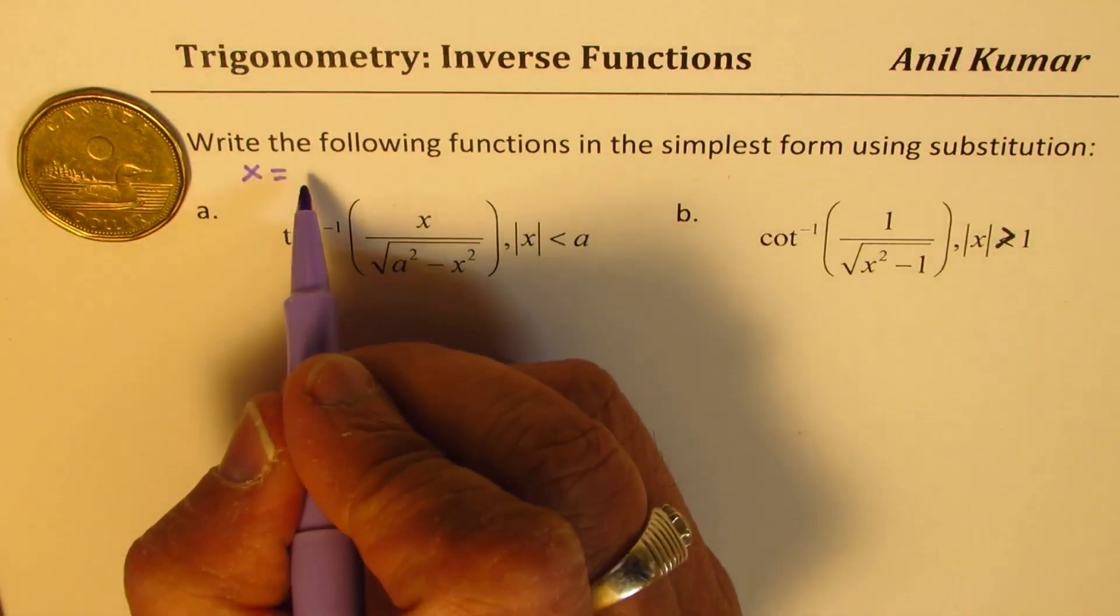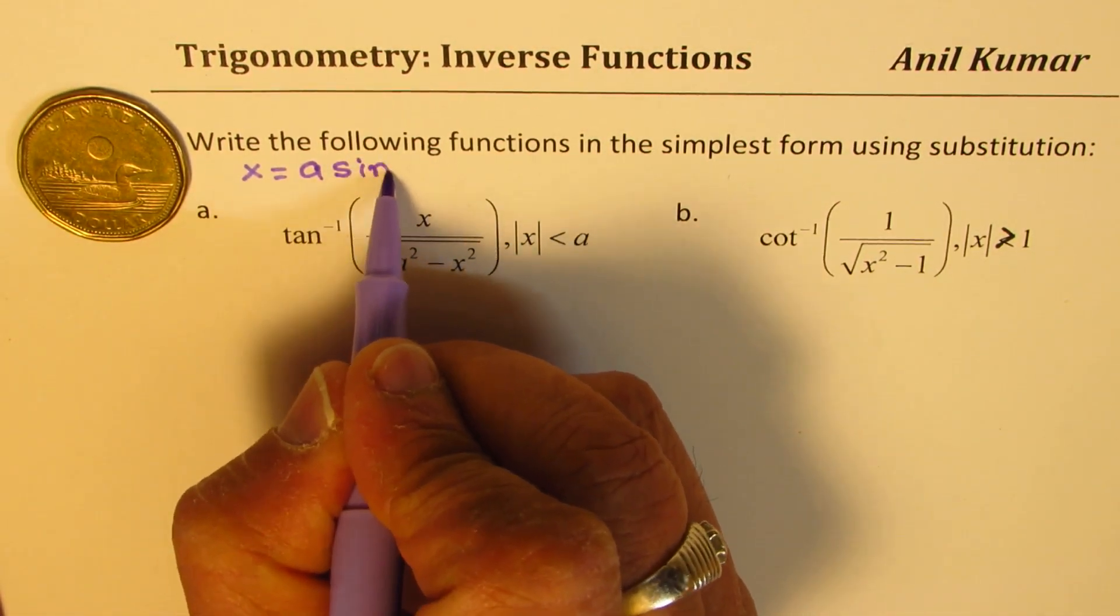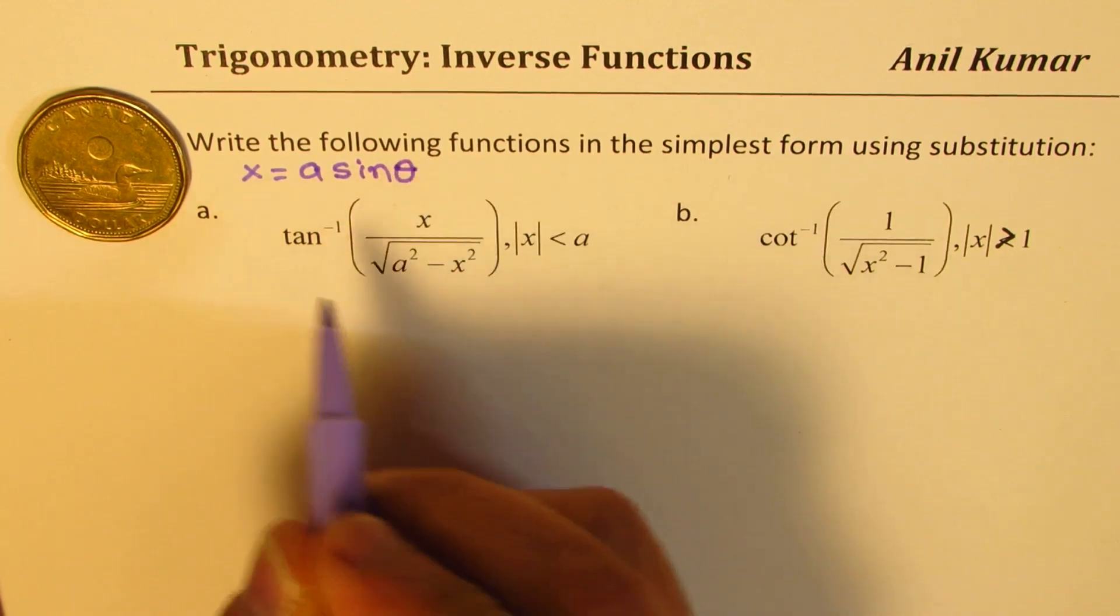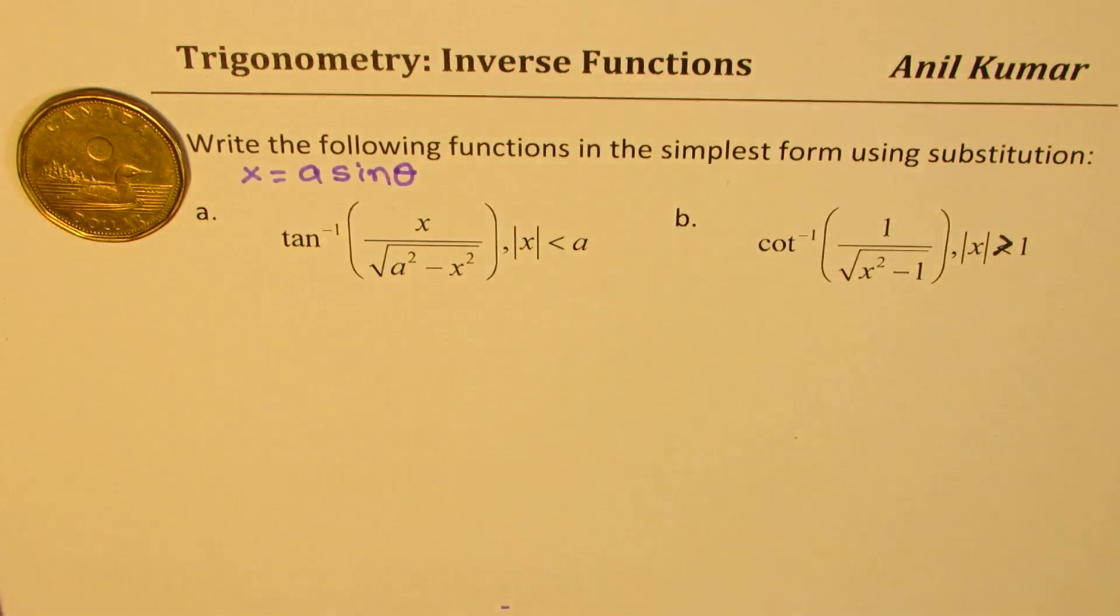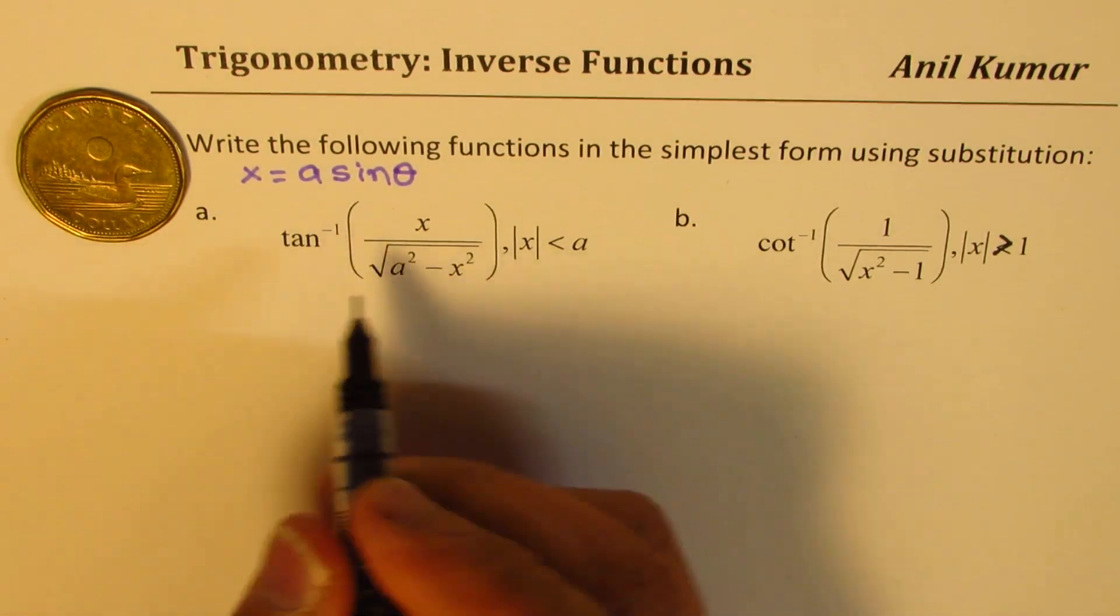So a good substitution for tan function in such a case will be x equals a sin theta. So for x, we'll put a sin theta. So that will help us. Let's see how it helps.